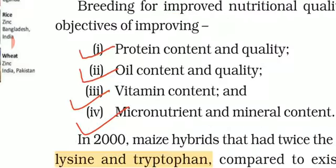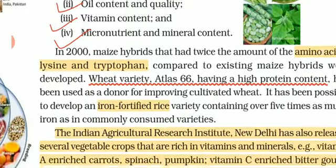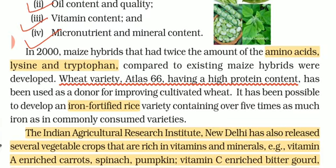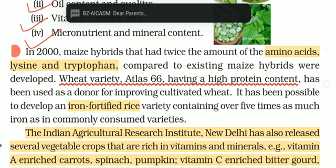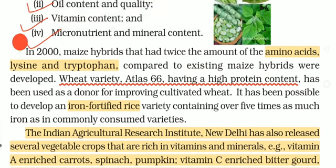In year 2000, maize hybrids were developed that had twice the amount of amino acids. Proteins are made up of amino acids. Amino acids such as lysine and tryptophan are rich in maize — all corn crops are rich in lysine and tryptophan compared to existing ones. Biofortification increased them in 2000. In brief, the genes of desirable quality are taken out, incorporated, and hybridization is performed — the same steps of plant breeding.